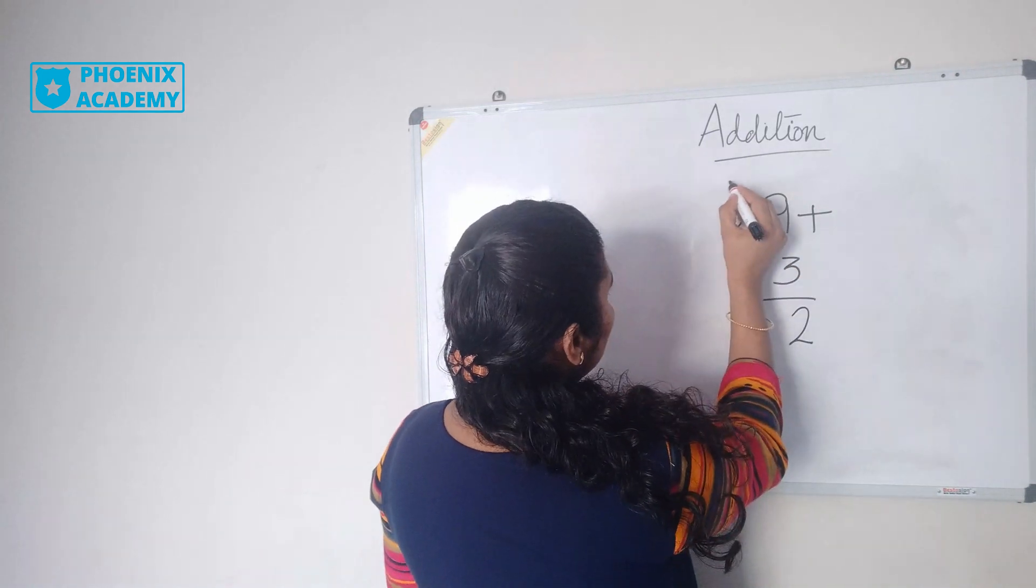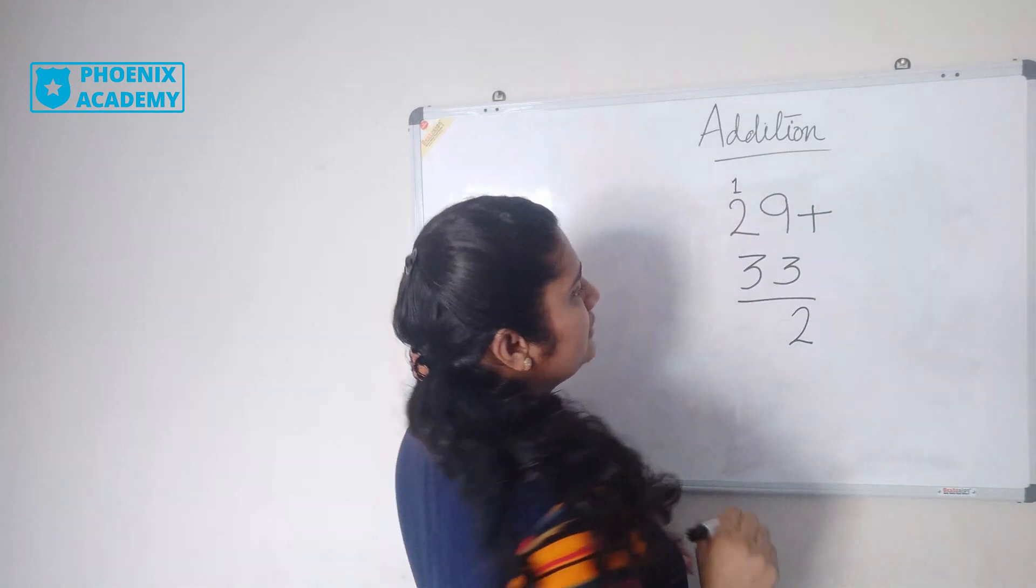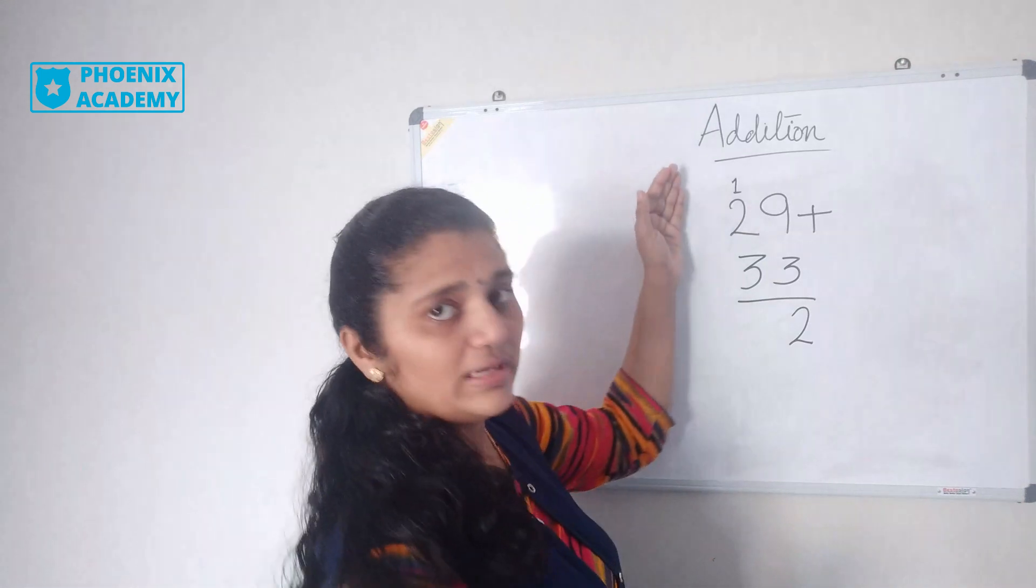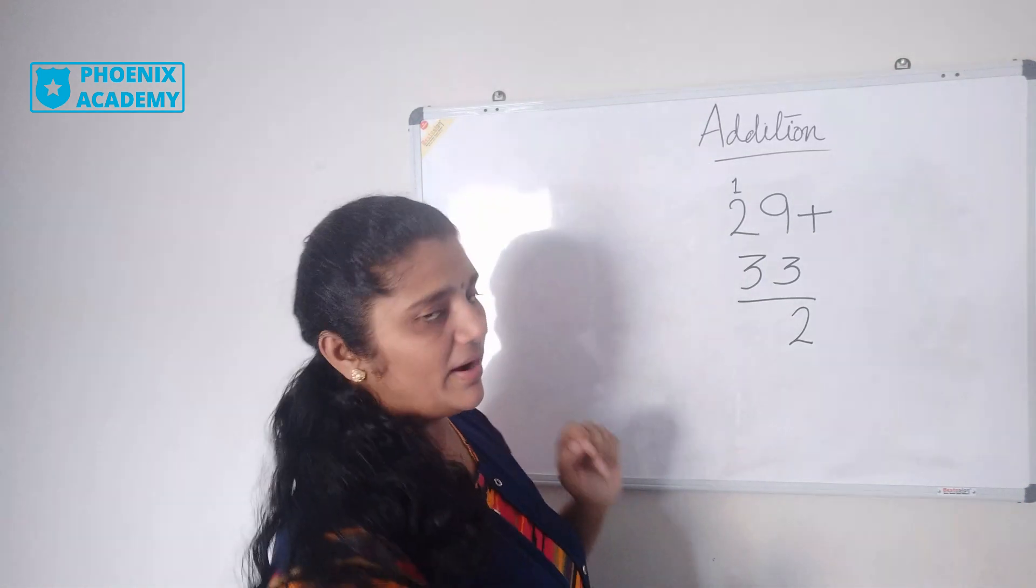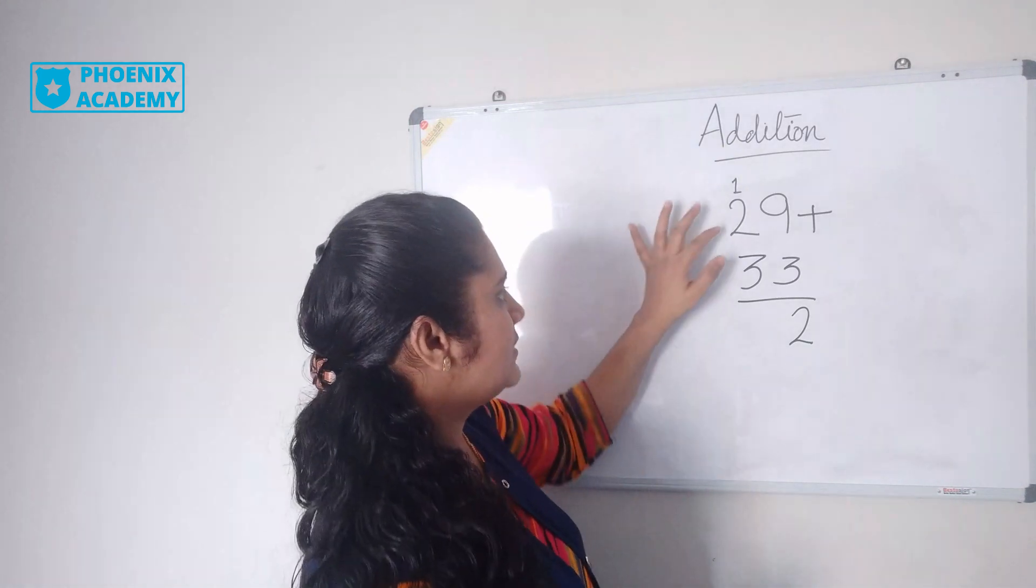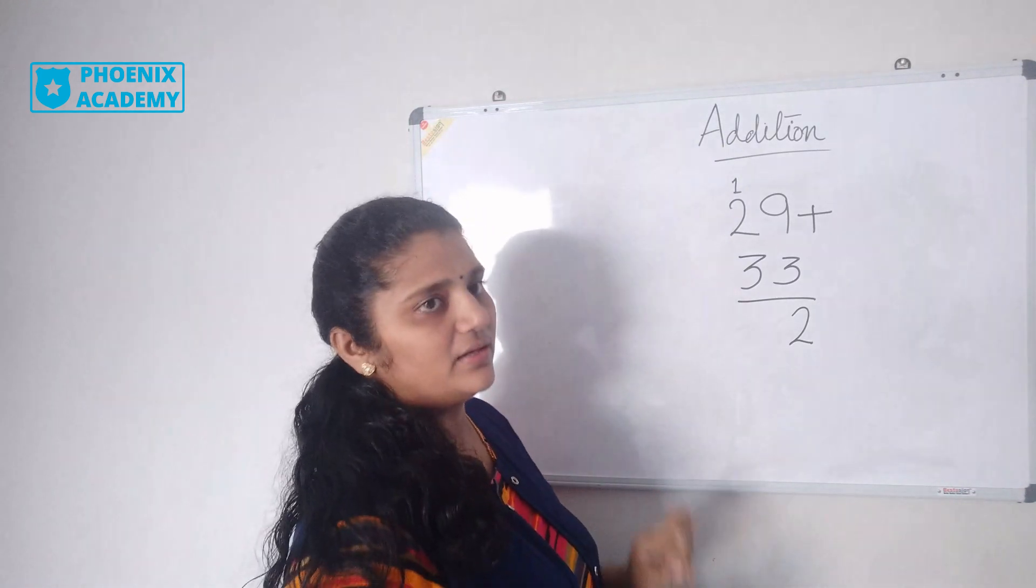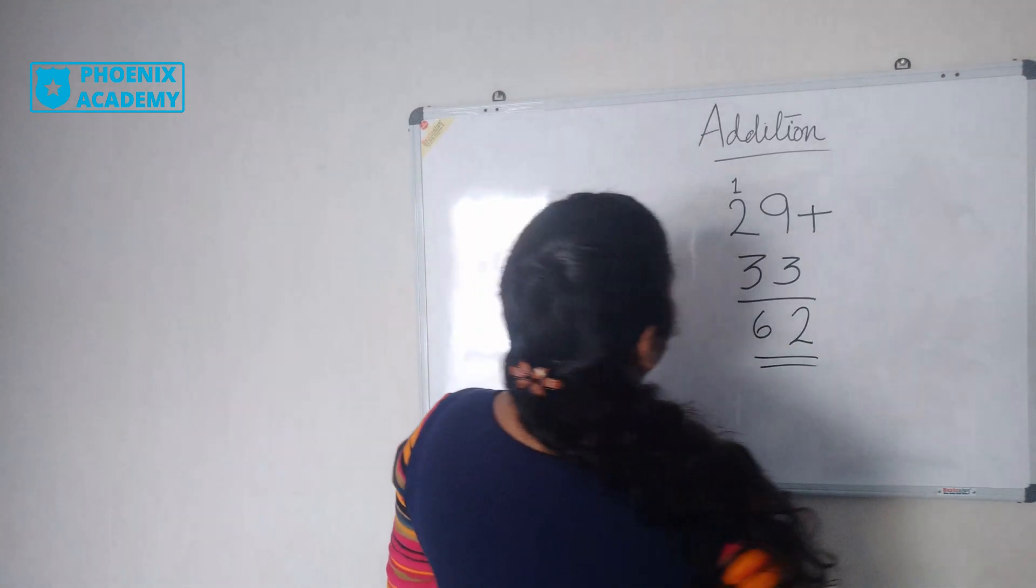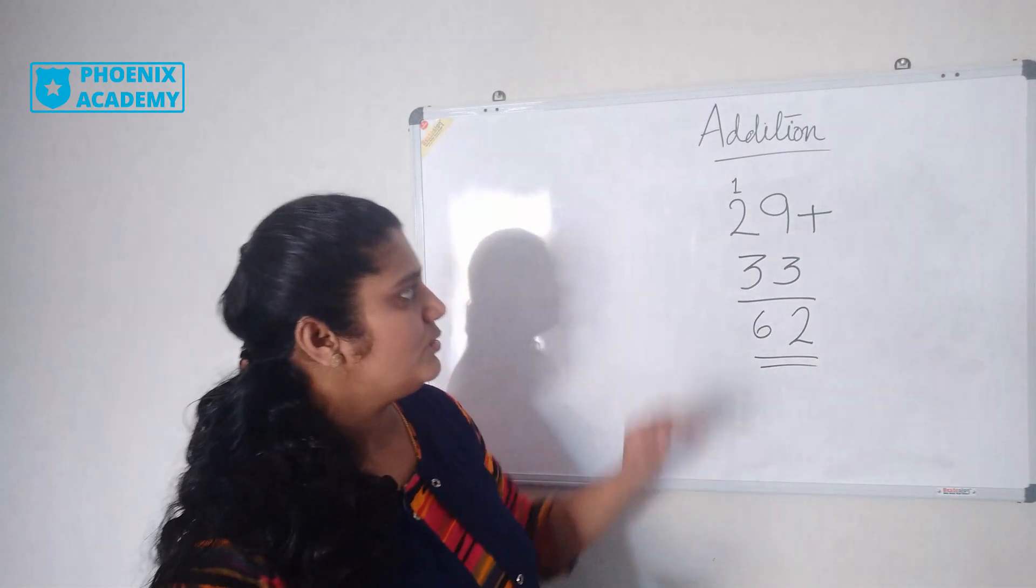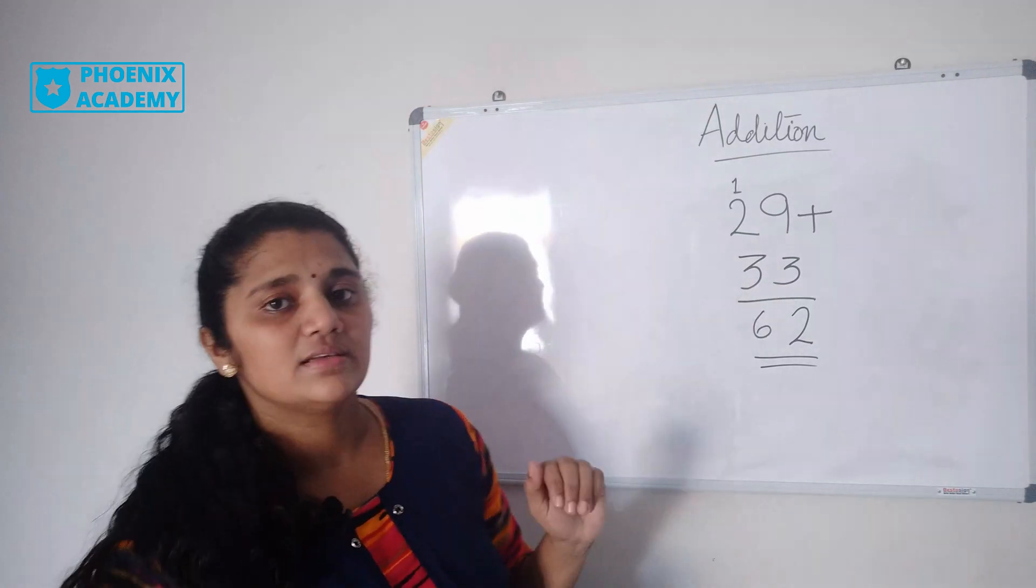The 1 is carried forward to the tens place. Now let's add the tens: 1 plus 2 is 3, then 3 plus 3 is 6. So 29 plus 33 is 62.